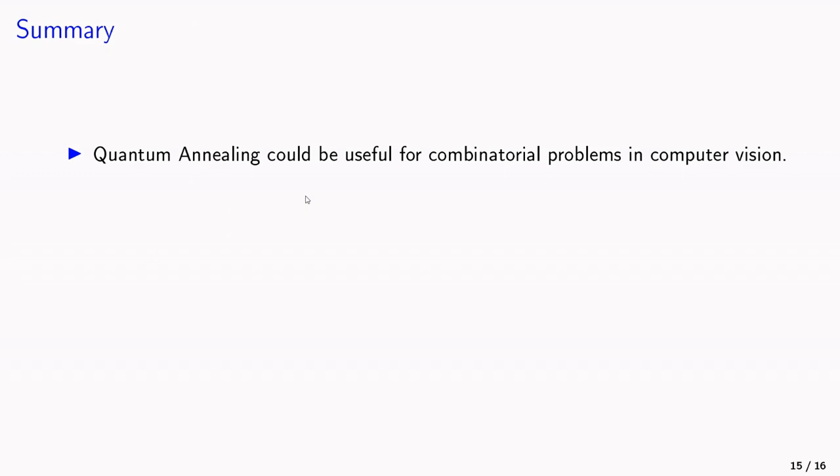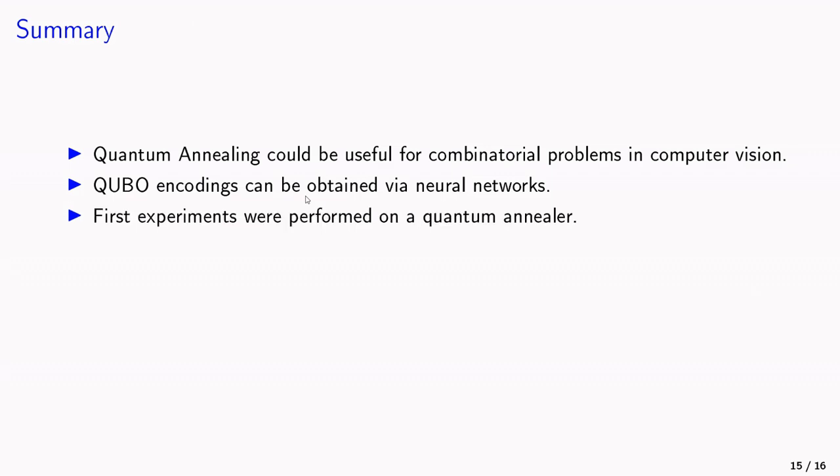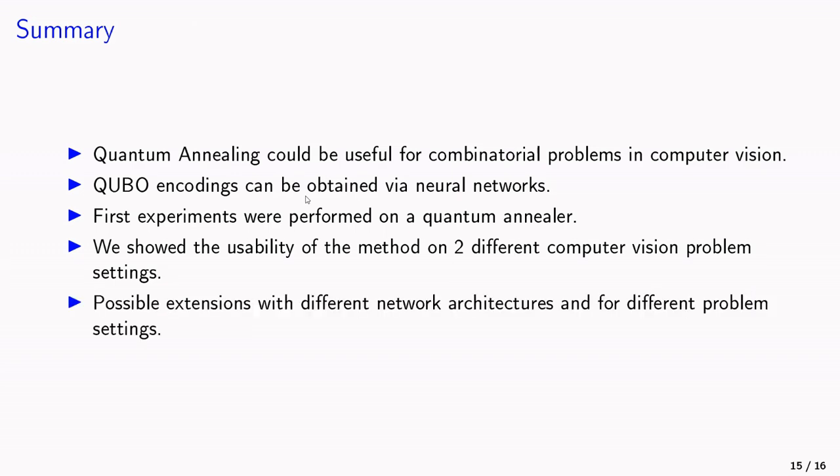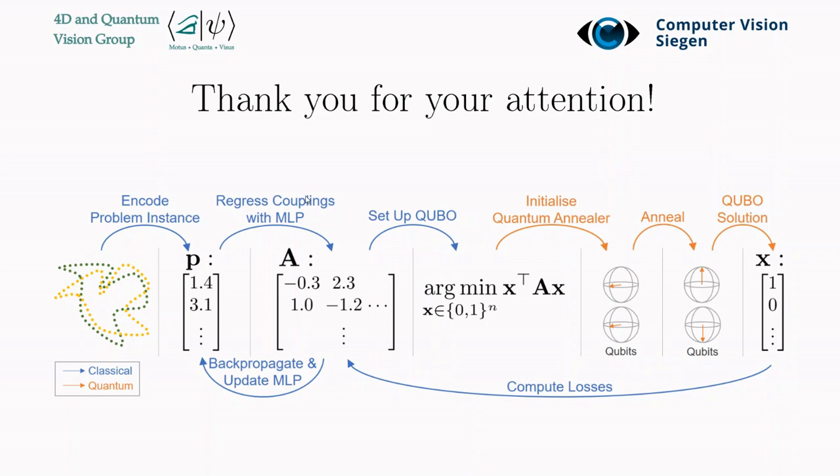One quick summary. Quantum annealing could be useful for many combinatorial problems in computer vision. QUBO encodings can be obtained via a neural network. And we have performed first experiments on a quantum annealer that showed the usability for two different computer vision problem settings. Possible extensions could look at different network architectures or different problem settings. Thank you for your attention.